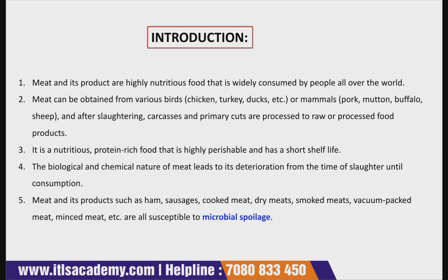We all know that meat and its products are very highly nutritious food, as it is widely consumed by different people all over the world. Meat can be obtained from various kinds of birds like chicken, turkey, duck, etc., or sometimes from mammals like pork, mutton, buffalo, and sheep. After slaughtering, the primary cuts are processed into raw or processed food products.